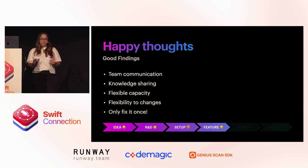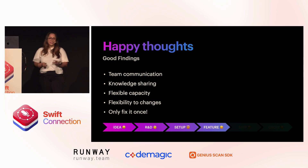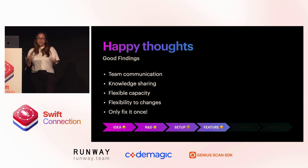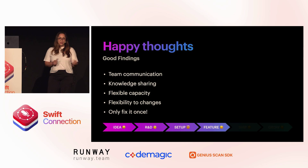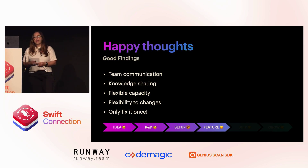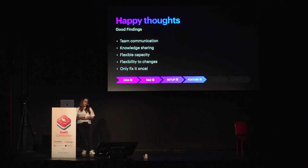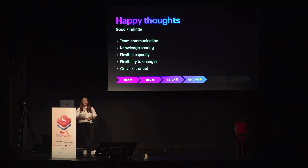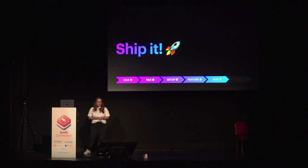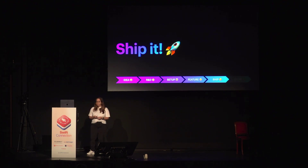Some other good findings, more on the soft skills side: team communication improved dramatically. Call it trauma bonding or friendship — we were talking more and more to each other, sharing knowledge, tips and tricks about Android Studio or Xcode. It also meant flexible capacity: if one of us was out on holiday, the Android team could step in. We were flexible to changes, and we only had to fix bugs once — so the product owner was super happy. In July 2022, we shipped our first KMM feature, and it went very well.